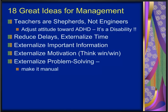Another executive function that ADHD impairs is the ability to mentally manipulate information in order to solve problems — to generate various options to overcome an obstacle. Therefore, the best way to cope with this deficit is to make it manual or physical, that is, to externalize it outside the child. Wherever possible, try to make problem-solving manual so the child can do it with their hands. For example, if there are math problems to be done, let the child have an abacus, a number line, a pile of marbles, or other objects that they can use to count, subtract, add, group, and sort. Externalizing problem-solving and making it manual can help children who have difficulties mentally manipulating information and generating multiple possibilities in their head.